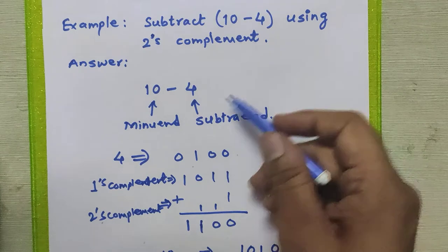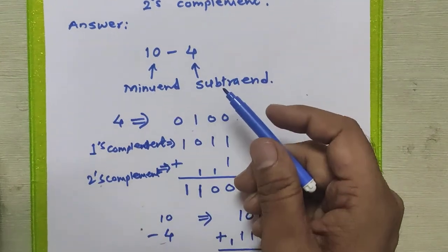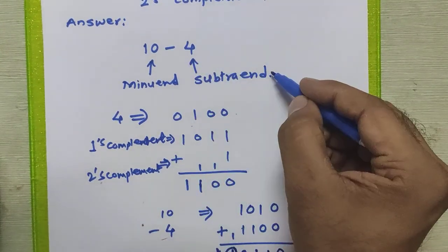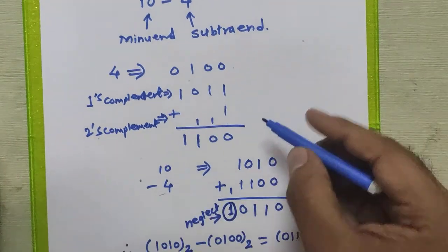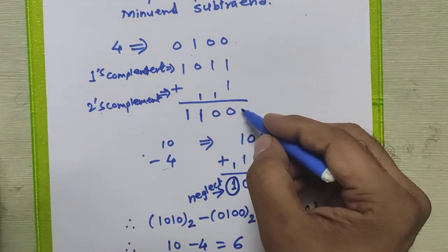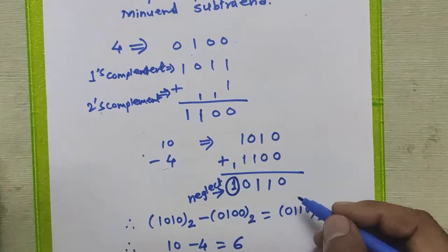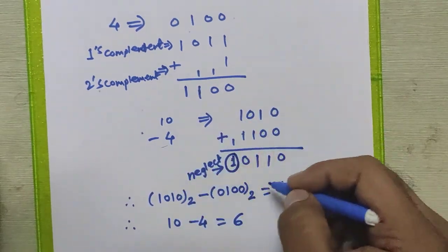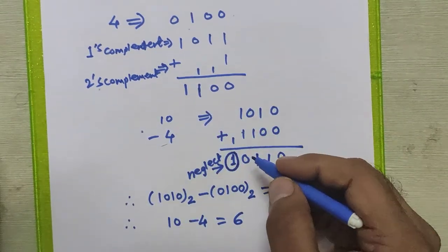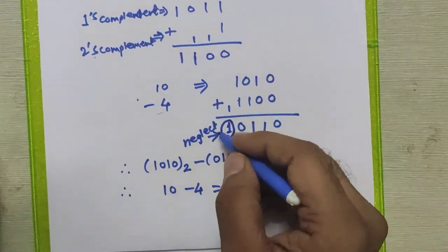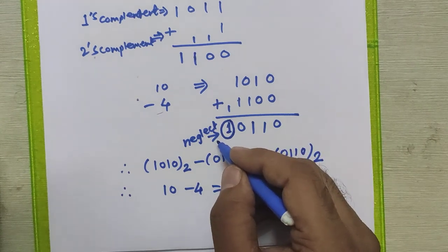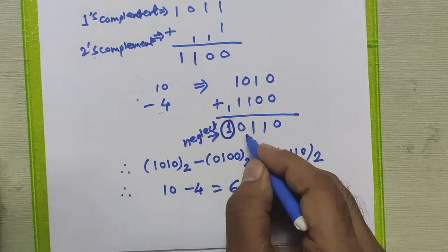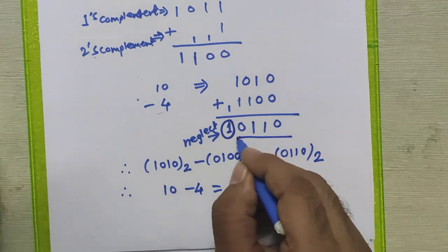To summarize: to perform subtraction using two's complement, find the two's complement of the subtrahend, add it to the minuend, and if you get any carry in the result, just neglect that carry — and the remaining bits will be your answer.